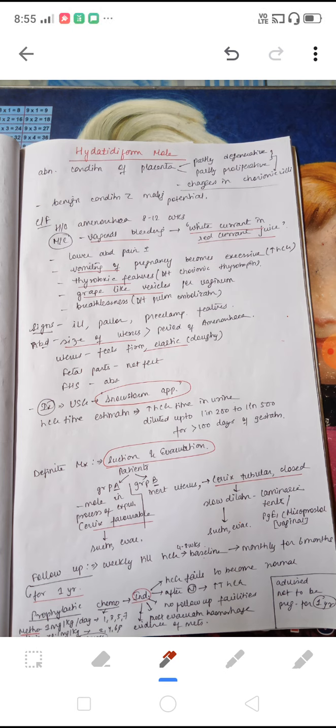There is also hydropic degeneration of villi that is usually present. Investigation of choice is the USG, that is ultrasonography. Typical appearance is snowstorm appearance.